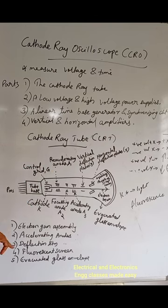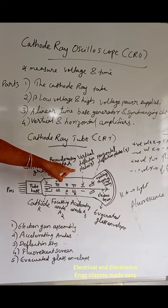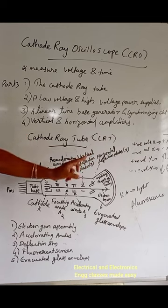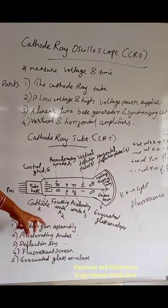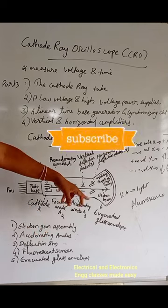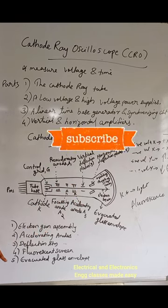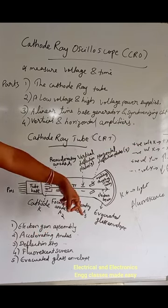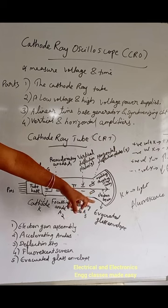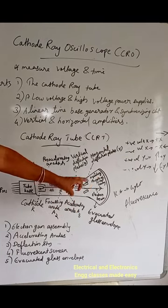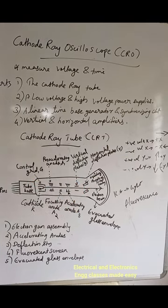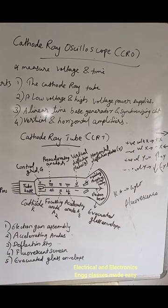The deflection system consists of vertical deflection plates and horizontal deflection plates. The fluorescent screen has a phosphor coating, and this is the evacuated glass envelope. The phosphor emits light when stimulated by electron bombardment, and that property is called fluorescence.